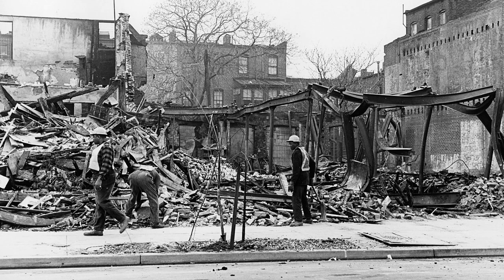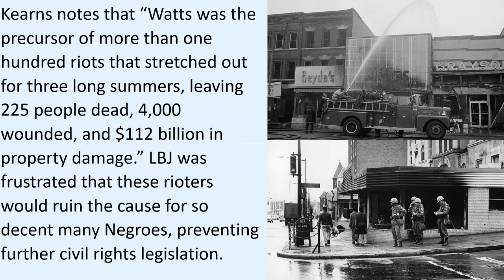LBJ was frustrated by the media attention that militant blacks, with their strange clothes and threatening demeanor, were attracting, though they appealed only to a small minority of blacks. But what ultimately derailed the civil rights programs were the persistent riots that started in Harlem and Watts in Los Angeles in 1965, and accelerated after the assassination of Martin Luther King in 1968. Kearns notes that Watts was the precursor of more than 100 riots that stretched out for three long summers, leaving 225 people dead, 4,000 wounded, and $120 billion in property damage. LBJ was frustrated that these rioters would ruin the cause for so many decent African Americans, preventing further civil rights legislation.